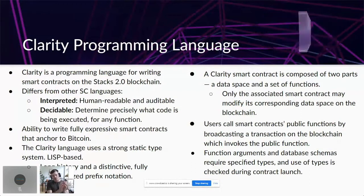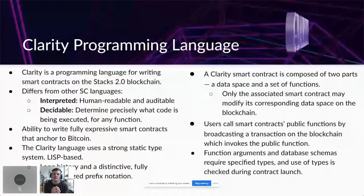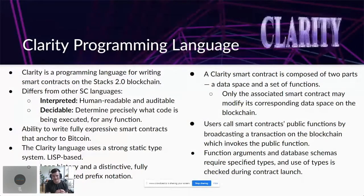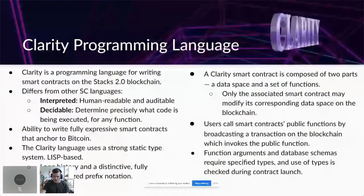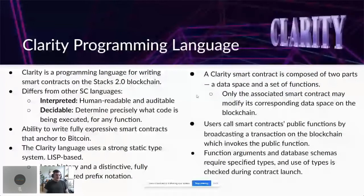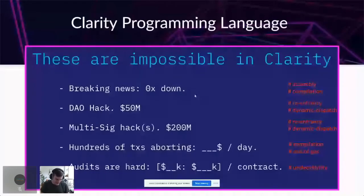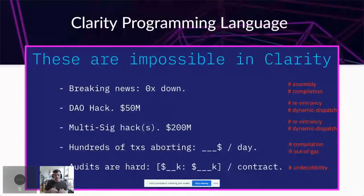Only the associated smart contract can access its own data space on the blockchain. If a smart contract saves a variable in that data space, another smart contract cannot go directly in and pull that variable. Some differences to other languages address past security vulnerabilities — including the 0x decentralized exchange going down, the DAO hack on Ethereum, and the multi-sig hack. The DAO hack and multi-sig hack were re-entrancy bugs that would be impossible with the Clarity smart contract language.